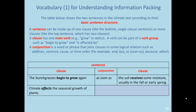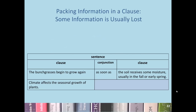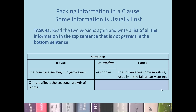Using this vocabulary, we note that the top sentence uses two clauses joined by a conjunction to express the idea, while the bottom, more abstract sentence expresses a very similar idea with less detail but in a smaller space — in one clause. It's generally true that packing information, shifting the expression from the top sentence to the bottom sentence, results in more abstract writing. Let's look at packing information in a clause in terms of the information that is lost: read the two versions and write a list of all the information in the top sentence that is not present in the bottom sentence.